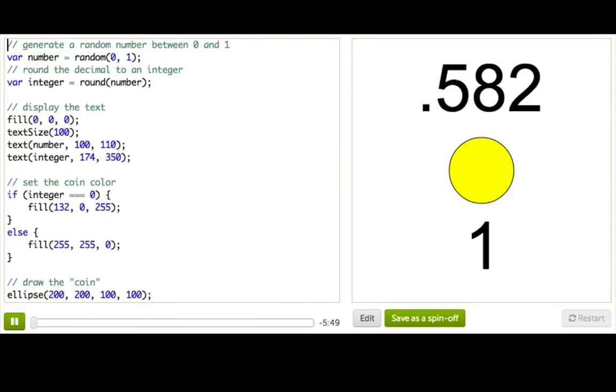Here's where we left off with our coin flipping game. We started out by generating a random number between 0 and 1, and then rounding that number to the nearest integer.